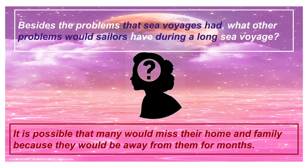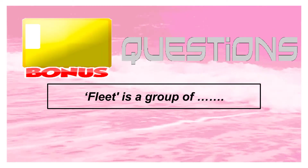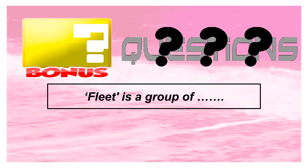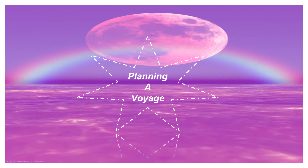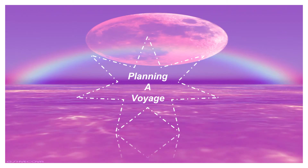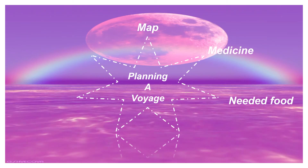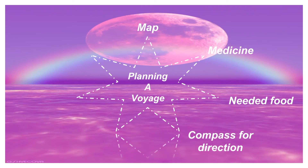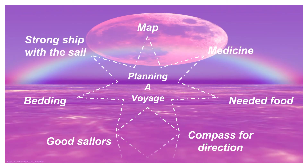I hope today's topic is clear to you all. Now you know how to plan a sea voyage — the conditions, times, difficulties, and other things. Bonus question of the day: 'Fleet is a group of ___.' You have to tell the answer. In short, for planning a voyage the necessary things to keep in mind are: map, medicine, needed food, compass for direction, good sailors, bedding, and a strong ship with a sail.